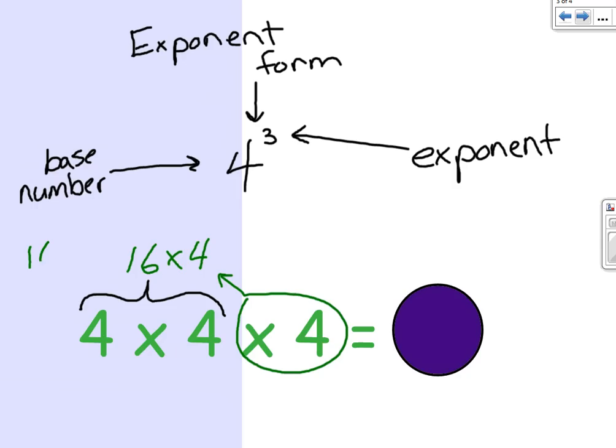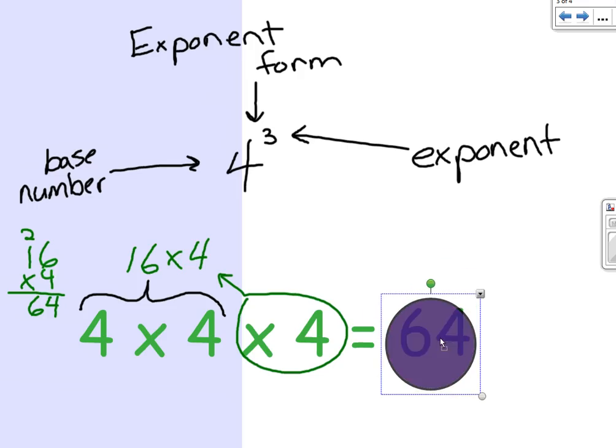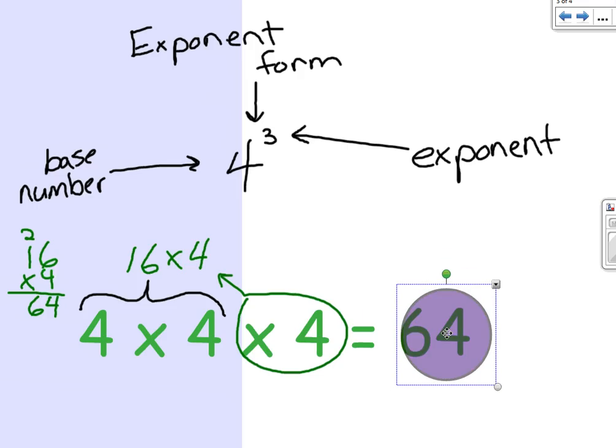Now, 16 times four, when we solve this problem, will actually give us 64. I have 24, regroup my two, or carry my two. And then four times one is four plus two is six. So 64. And we can click here and check our answer. Behind the circle, we see number 64 is correct.